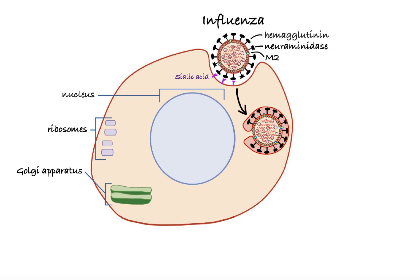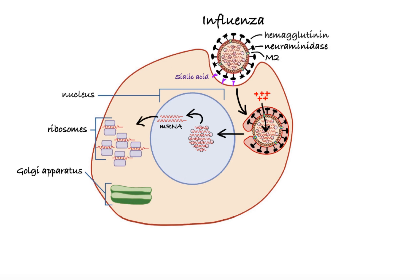Next, the membrane protein M2 forms pH-gated channels that allow protons to move through the viral envelope and acidify the core of the virus, causing release of the viral RNAs and proteins, which are then transported into the cell nucleus. In the nucleus, viral RNA is transcribed into messenger RNA. The translation of mRNA into viral proteins takes place in ribosomes in the cytoplasm. Once synthesized, hemagglutinin and neuraminidase glycoproteins are secreted through the Golgi apparatus onto the cell surface, where they fuse with the plasma membrane, whereas other viral proteins migrate back to the nucleus, where they assemble with newly replicated genomes.